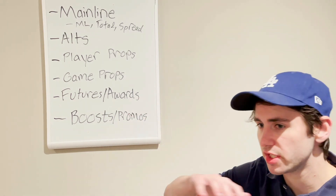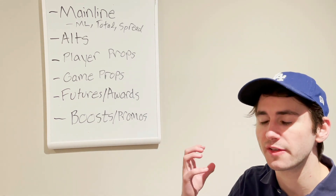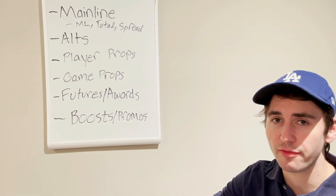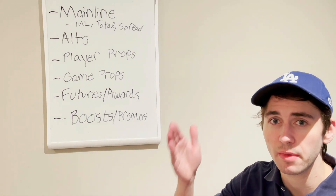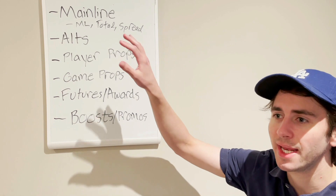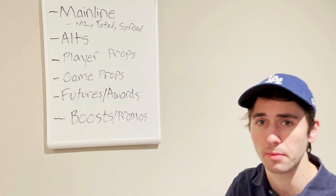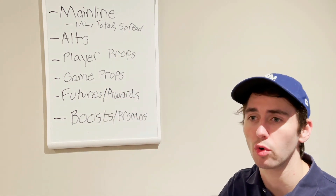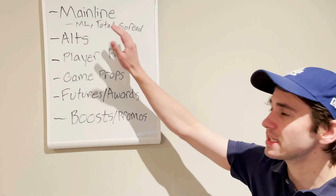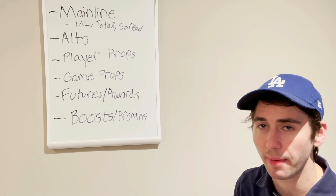The first one is just main markets. If you think of sports betting, you think of money line, point spread for an NBA game, and the amount of total points in the game — that's mainline markets. You can also include first half money line, first quarter money line, first quarter total points in a college football game. Basically, mainline markets are the main ones you think about.